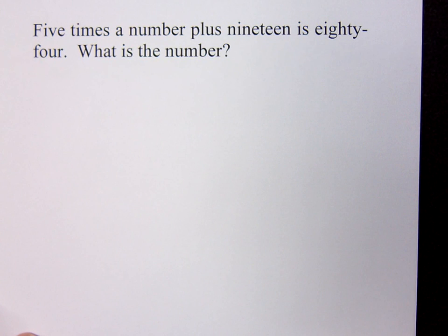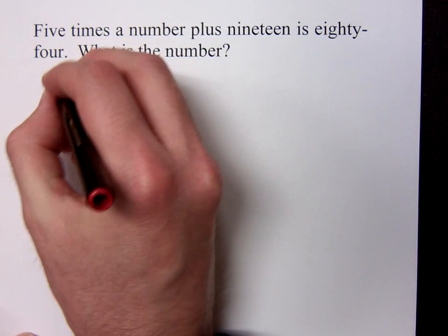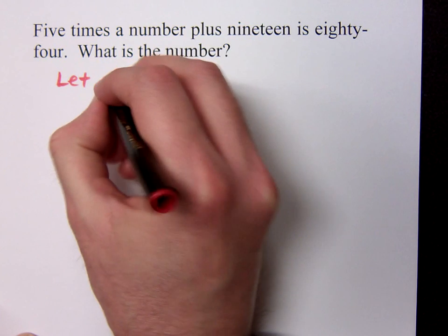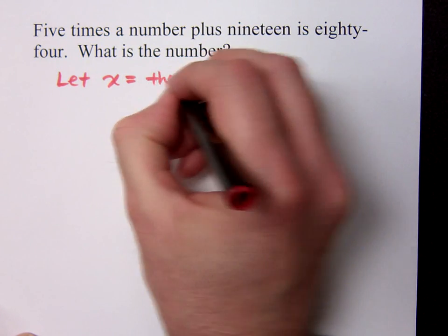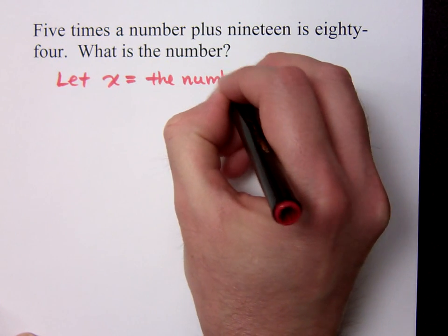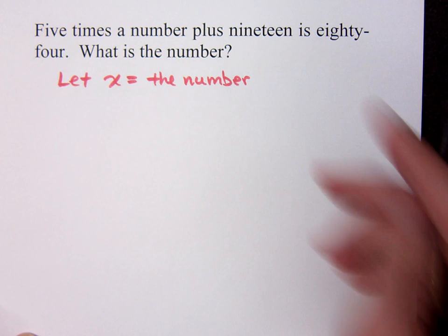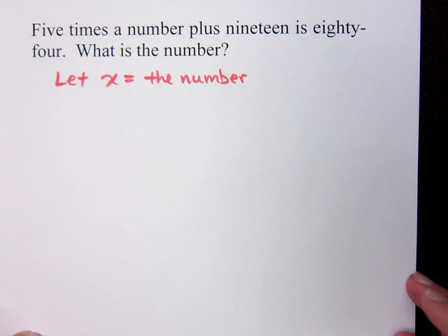When it's looking for just a number, it can be positive, negative, fraction, decimal, who knows? So I don't know what the number is. I'm just going to say this. Let x equal the number. You may say some number. You may say the missing number. It doesn't matter. And you may say x, n, a, y. I don't care what variable you use. It doesn't matter.